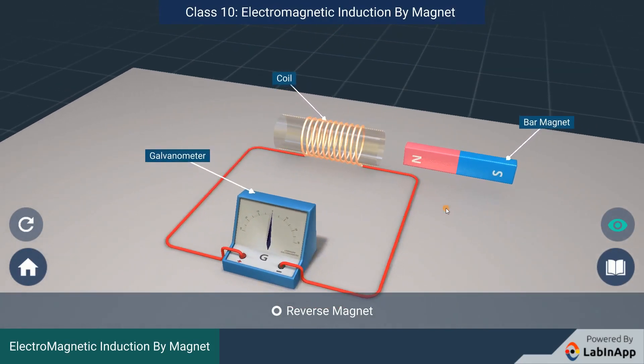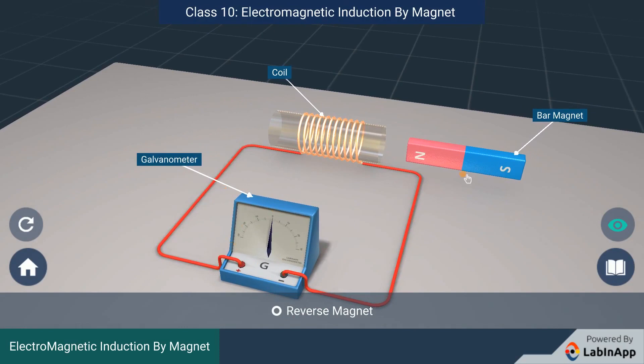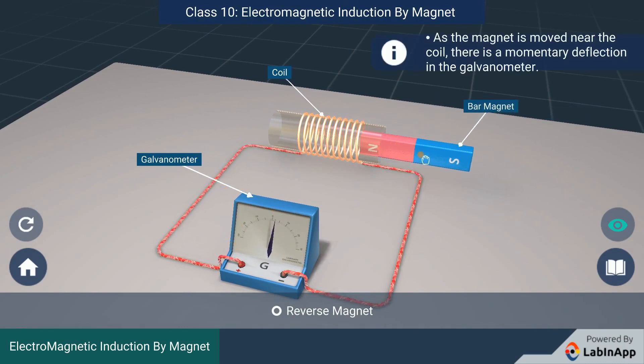Move the magnet into the coil and carefully observe the galvanometer deflection. As the magnet is moved near the coil, there is a momentary deflection in the galvanometer.